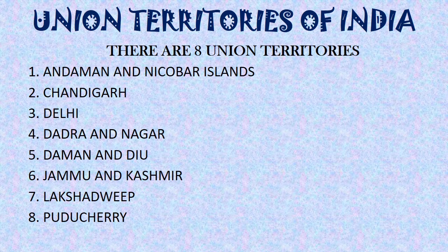The 8 Union Territories are: Andaman and Nicobar Islands, Chandigarh, Delhi, Dadra and Nagar Haveli, Daman and Diu, Jammu and Kashmir - the new Union Territory - Lakshadweep, and Puducherry. Puducherry means Pondicherry - it comes under Union Territory. Once again, the 8 Union Territories: Andaman and Nicobar Islands, Chandigarh, Delhi, Dadra and Nagar Haveli, Daman and Diu, Jammu and Kashmir, Lakshadweep, Puducherry.